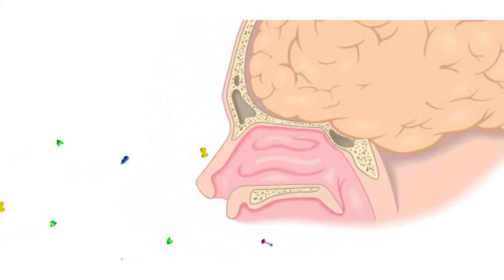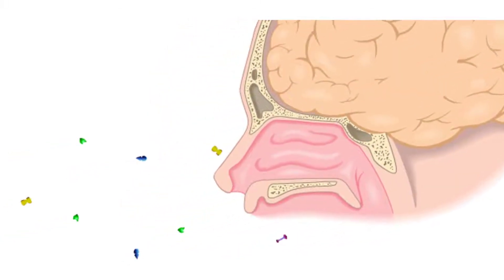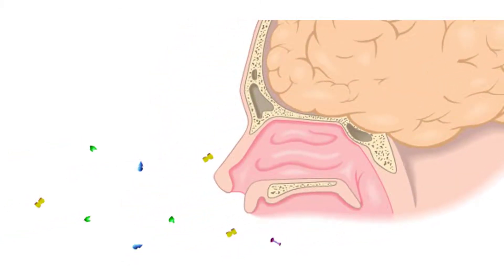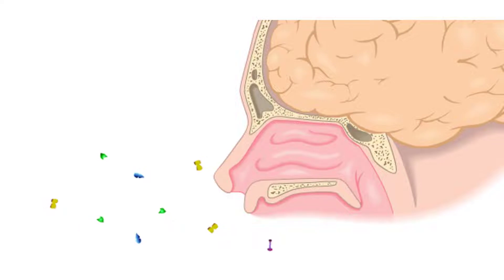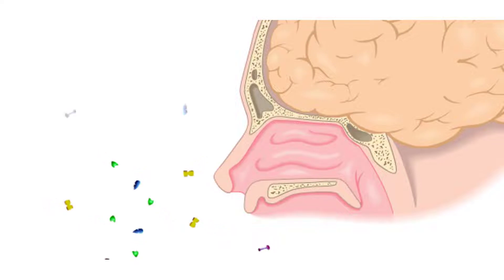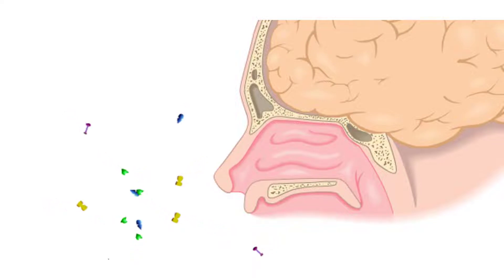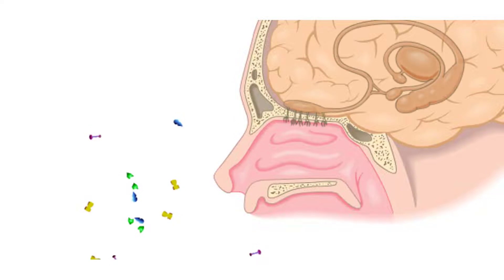Do you ever wonder how you can distinguish thousands of different odors? Olfaction, or the sense of smell, is used by all mammals to navigate, find food, and even find mates.